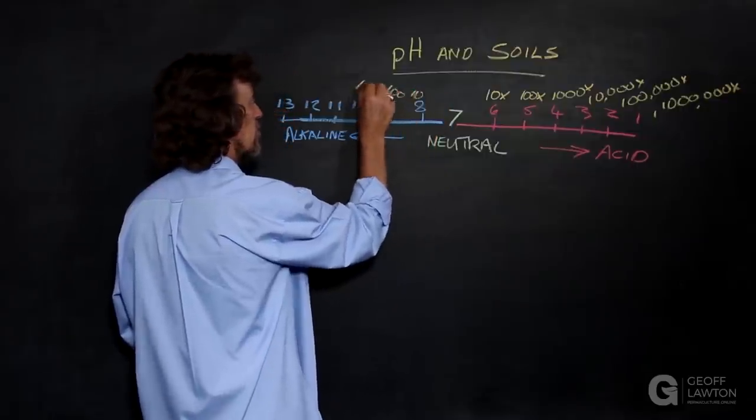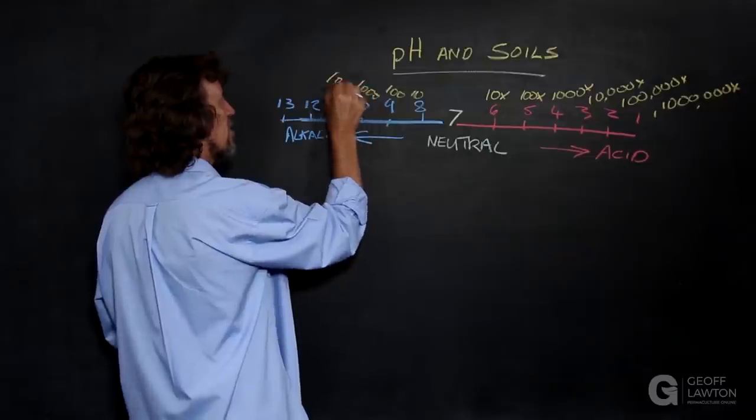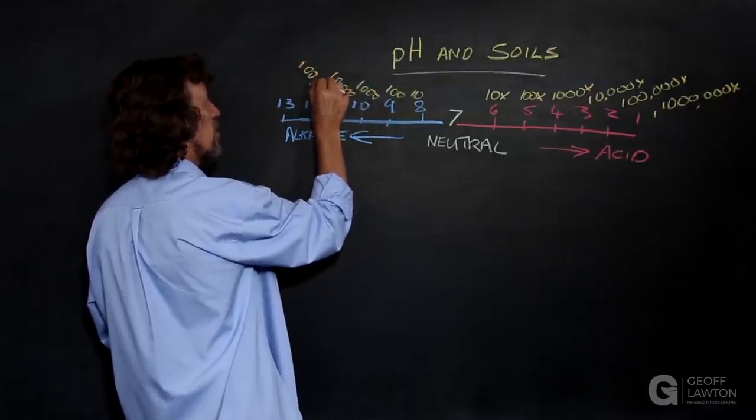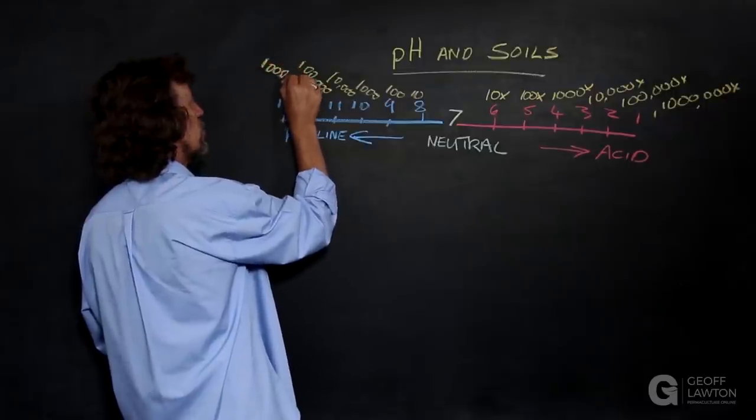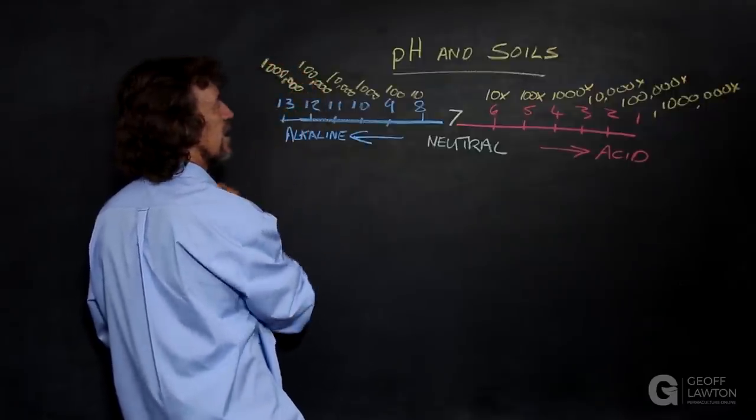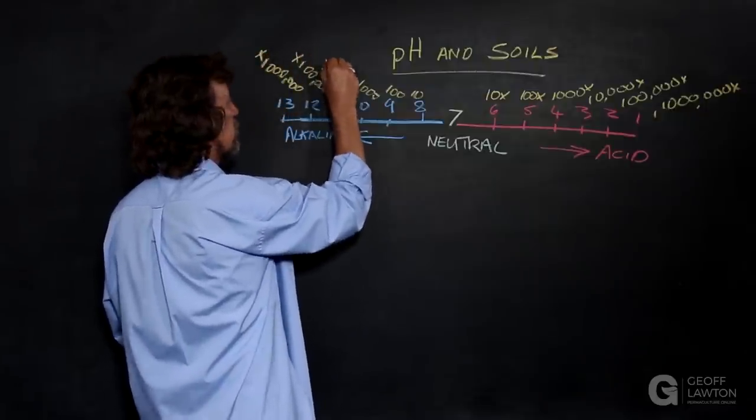And it goes in the opposite direction: ten, a hundred, a thousand, ten thousand, one hundred thousand, and one million times more alkaline out at this end. So it's a logarithmic scale. It's to the power of ten. It's not a little bit more alkaline or not a little bit more acid.